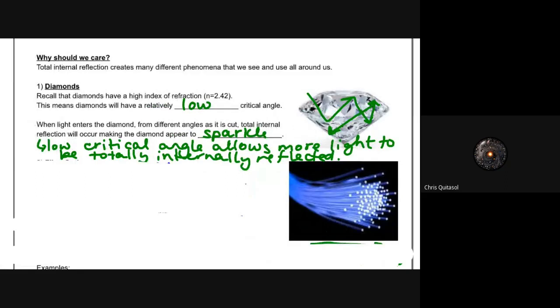So in diamonds, diamonds have a high index of refraction, that n is equal to 2.42. This means that diamonds have a relatively low critical angle. So when light enters the diamond, from different angles as it is cut, total internal reflection will occur, making the diamond appear to sparkle. So this low critical angle allows more light to be totally internally reflected.